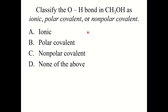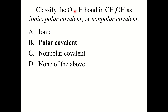Let's try a knowledge check question: classify the O-H bond in CH3OH as ionic, polar covalent, or nonpolar covalent. The correct answer is polar covalent. It is not ionic since oxygen and hydrogen are both nonmetals. Looking at oxygen and hydrogen, they have pretty significantly different electronegativity values — oxygen wants electrons much more than hydrogen does — so the electrons in this bond are not shared evenly. This is a polar covalent bond.